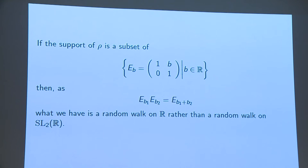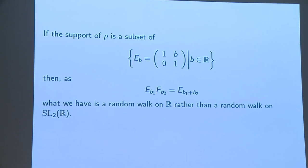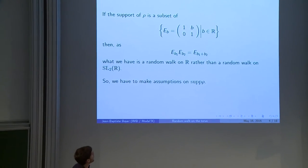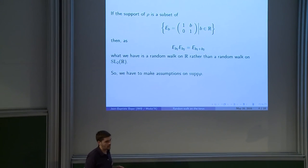If I take matrices in that set, you see that what I have is a random walk on R and not a random walk on SL₂(R). So I want to prevent this thing from happening.